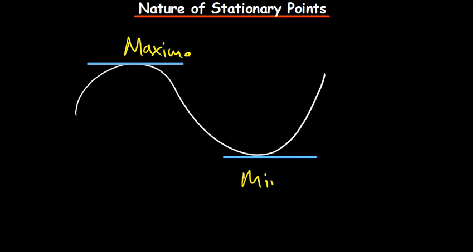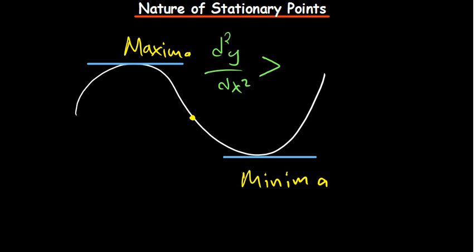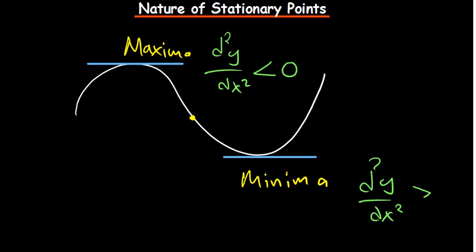Stationary points can either be a maxima, a minima, or a point of inflection. For a maxima, the second derivative is less than zero. For a minima, the second derivative is greater than zero. And where the second derivative is equal to zero, that is called the point of inflection. This is how we determine the nature of stationary points.